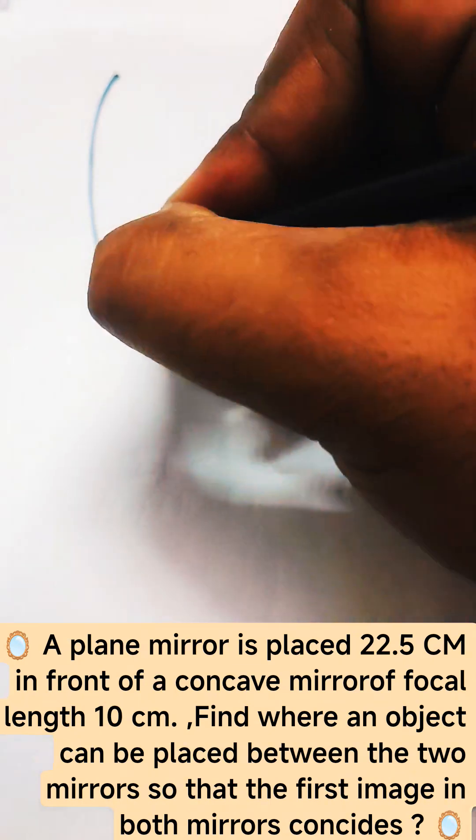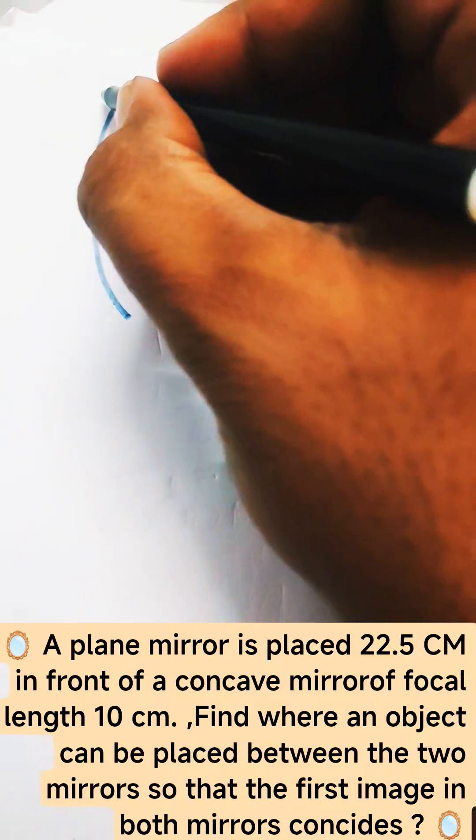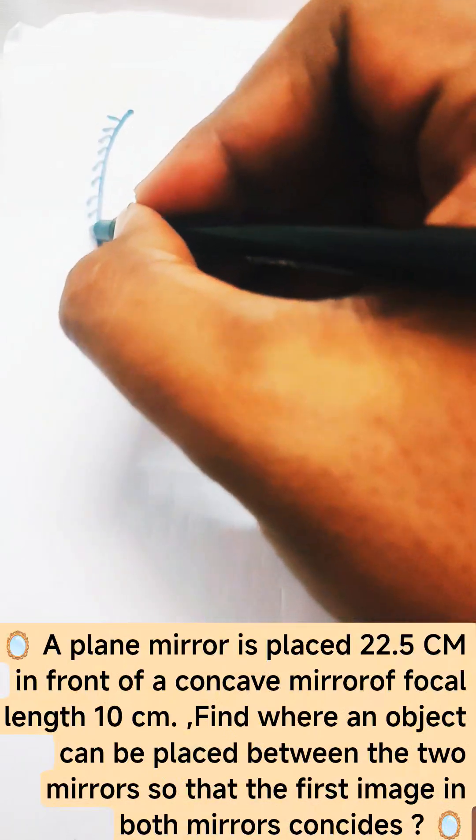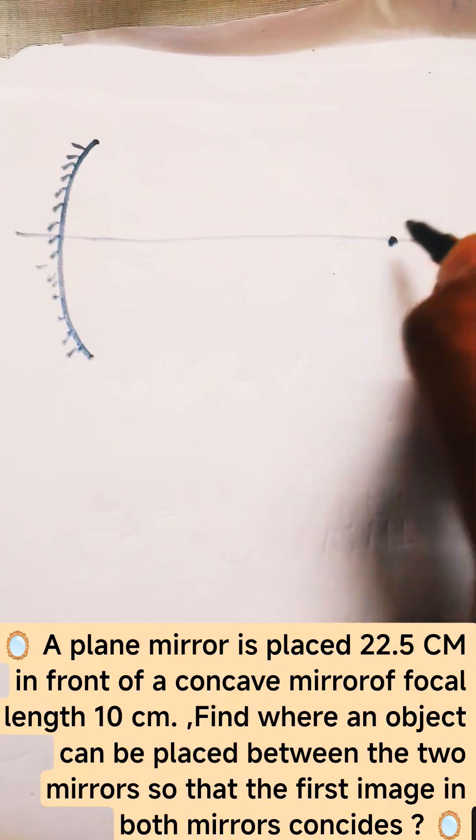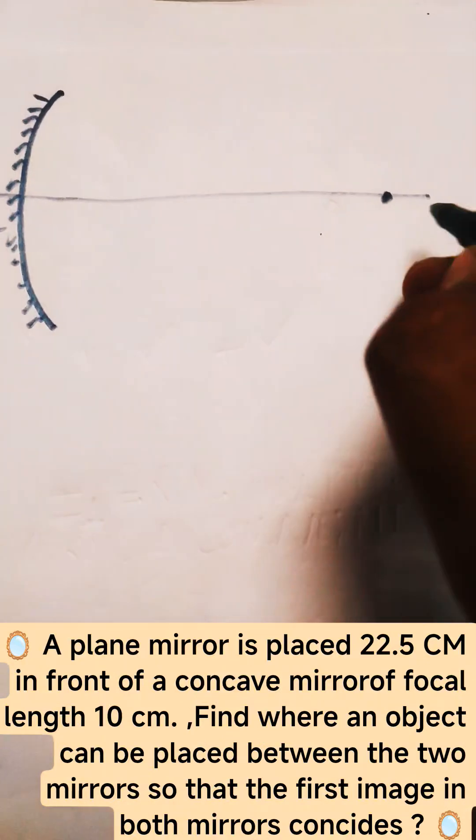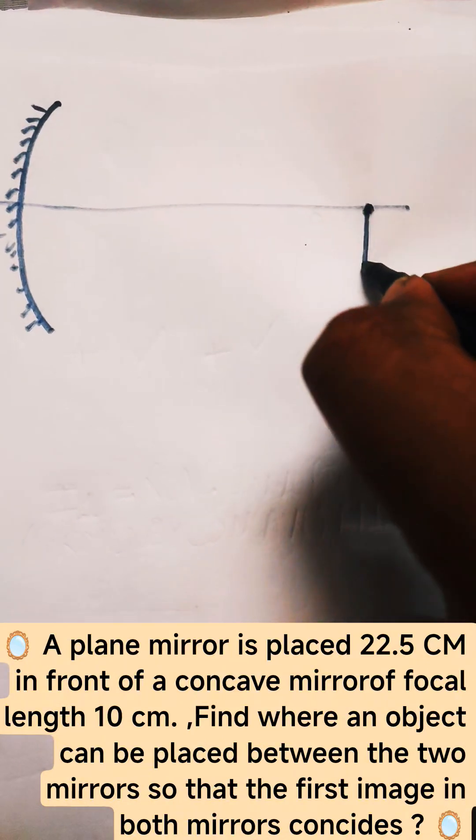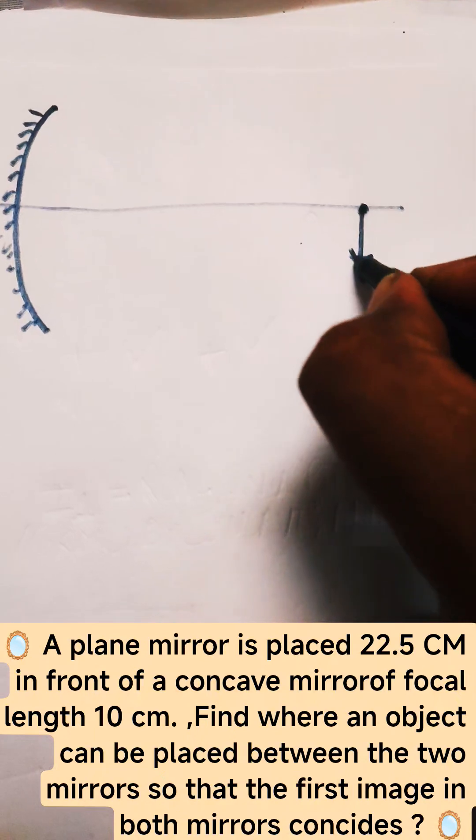A concave mirror is given to you, and it is forming some image somewhere. Let's say it is forming an image over here. Since it's a concave mirror, it is forming an image which will be real and inverted.